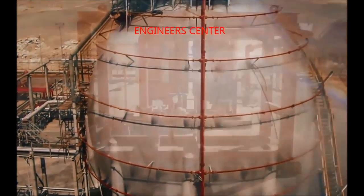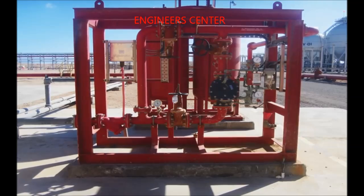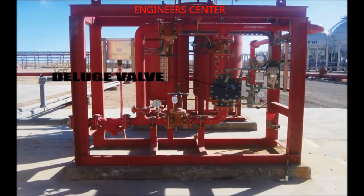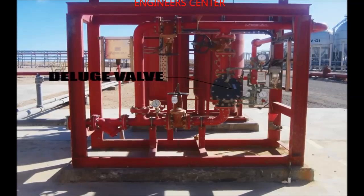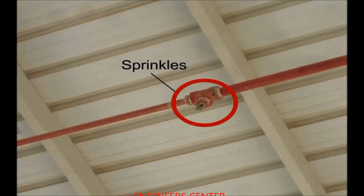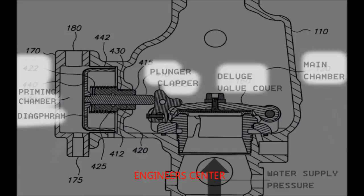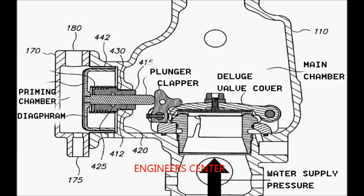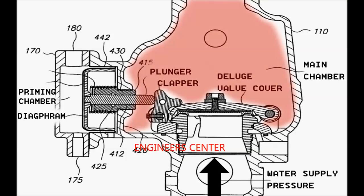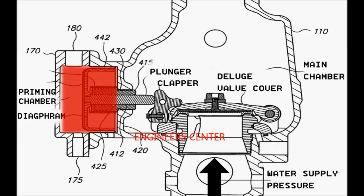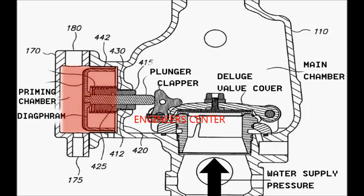The deluge fire protection system depends on the presence of a deluge valve that controls the flow of highly pressurized fire extinguishing fluid to the sprinklers or nozzles when a temperature element senses high temperature on the protected equipment. The deluge valve consists of two chambers: a main chamber, in which there is the motion of opening and closing the deluge valve, and the priming chamber — also referred to as the sensing chamber — in which there is the motion of the diaphragm responsible for opening and closing the deluge valve.